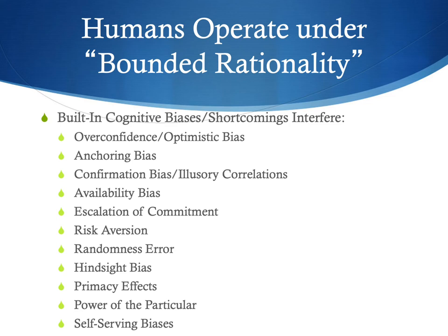One of the problems with thinking about human beings as rational decision makers is that humans necessarily operate under something known as bounded rationality. In other words, even if we're trying to be as rational as we can be, there are limits on how rational we can be.